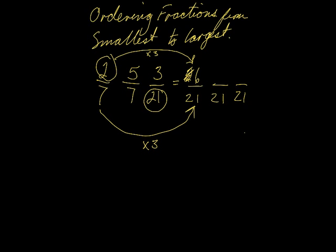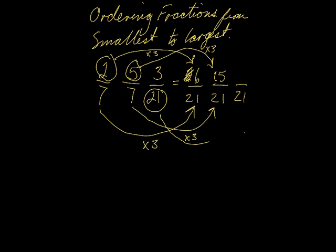We have another 7 here. What did I multiply the 7 by to get 21? I multiplied it by 3, so I'll multiply this 5 by 3. 5 times 3 is 15. I didn't multiply the 21 by anything, so I can just move this 3 over.